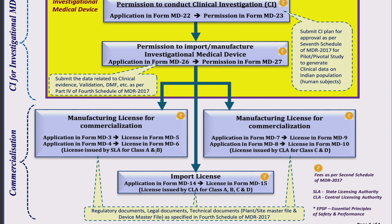For Class A and B, the permission is issued by the SLA — State Licensing Authority. I need to file the application in form MD3, and the SLA will issue the license in form MD5 for Class A and B. For import of medical devices under Class A and B, I need to file in form MD4, and the SLA will issue the permission in form MD6.